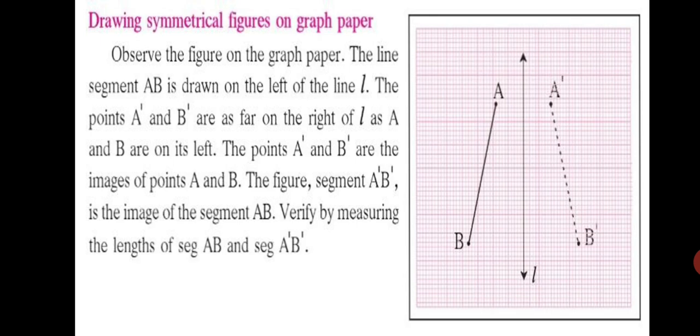The points A' and B' (you read it as A prime and B prime, or A dash and B dash) are as far on the right of line L as A and B are on its left.